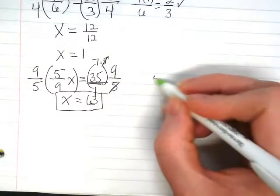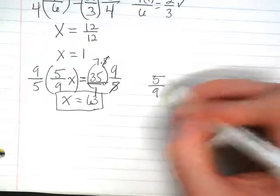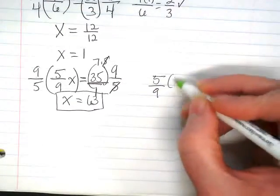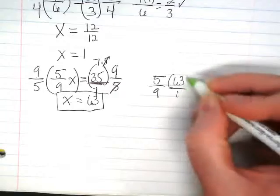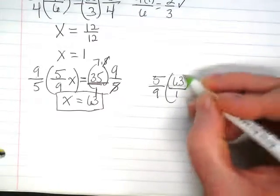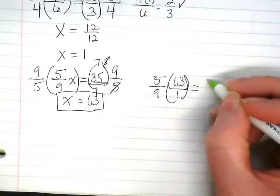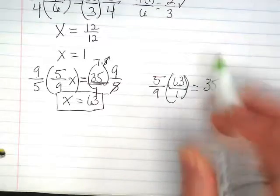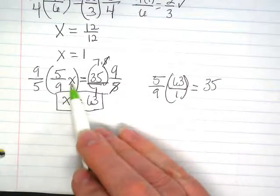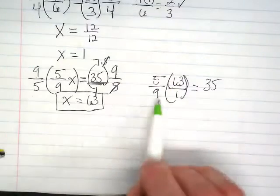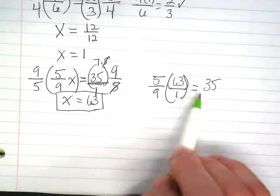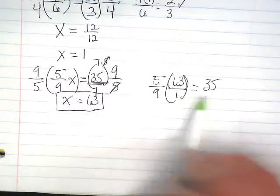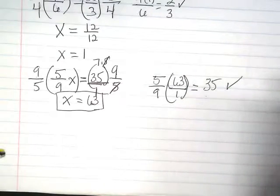You can go back and plug that in and check, and I'll leave this for you to do with a calculator on your own. I put 63 over 1 in where the x had been, so these two will be multiplied and divided by 9. And does that equal 35? You're going to find out that it does.